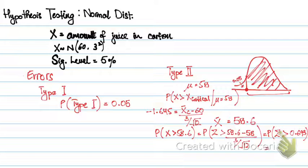And this area, this probability is... So that's your probability of the Type II error. It's basically the acceptance region with the new mean.